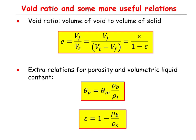The void ratio can also be written as Vf divided by Vt minus Vf, since Vs equals Vt minus Vf. If you divide the numerator and denominator by Vt, then Vf divided by Vt equals porosity by definition, and Vt divided by Vt equals one. Therefore, void ratio can be written as porosity divided by one minus porosity.